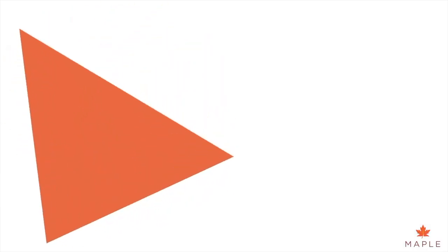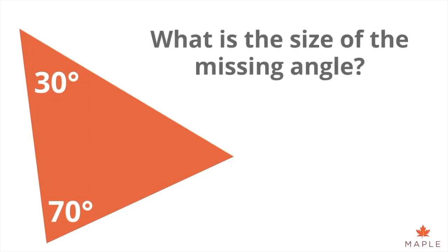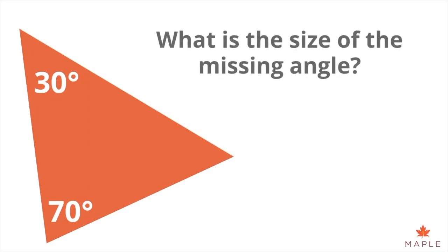In this triangle, one angle is 30 degrees and the second angle is 70 degrees. What is the size of the missing angle?